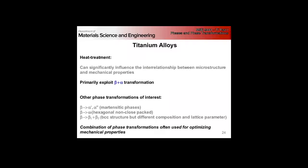If we go into the alpha plus beta alloys, we're going to try to develop heat treatments that primarily exploit the beta to beta plus alpha transformation. The other phase transformations of interest are the martensitic phases, the beta to omega which is hexagonal non-close-packed, and the beta to beta-1 and beta-2, which are both BCC structures but different compositions and different lattice parameters.